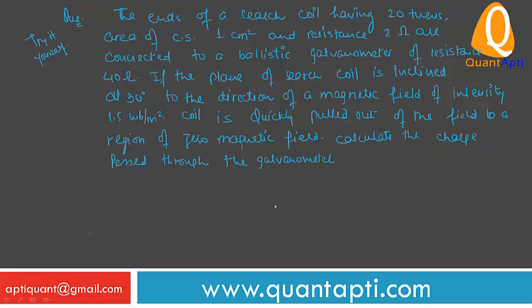So check the question. The ends of a search coil having twenty turns - twenty turns means what is given? N is given, N is equal to twenty turns. Area of cross section one centimeter square. So area is also given, one centimeter square. Resistance given is two ohm. Write what is given. Connected to a ballistic galvanometer of resistance forty ohm.